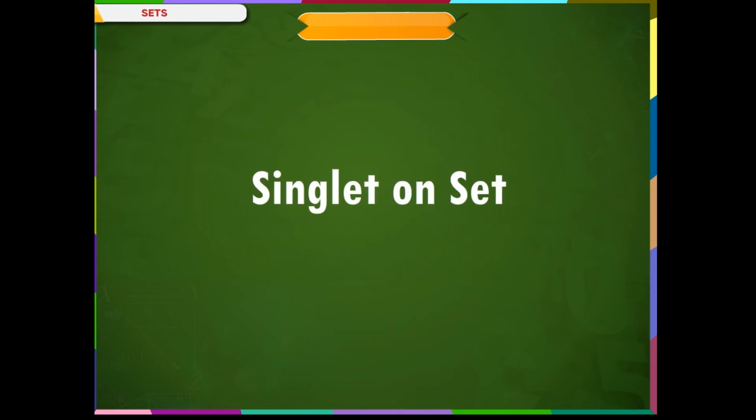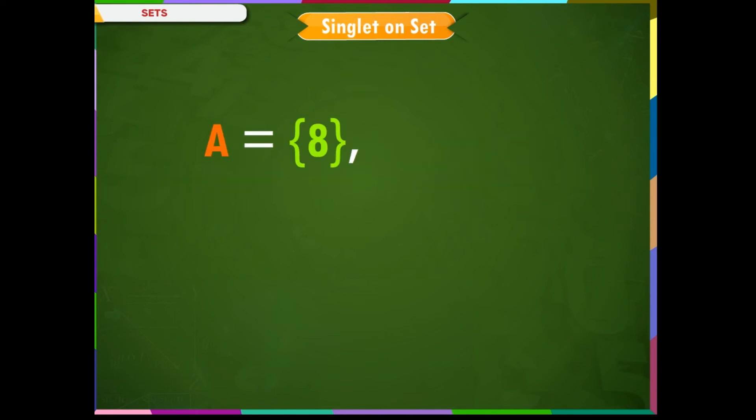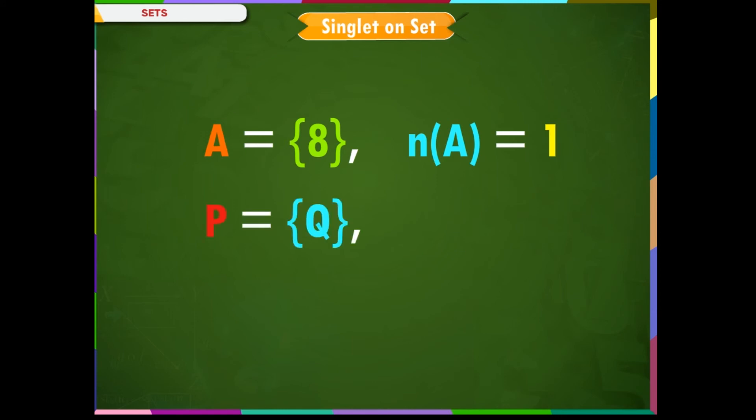Singleton set. A set containing only one element is called a singleton set. Some examples: A = {8}, n(A) = 1. P = {Q}, n(P) = 1.